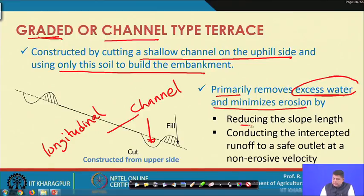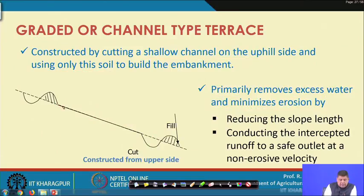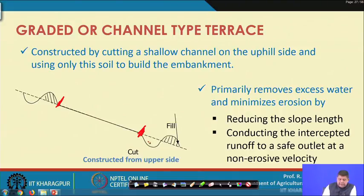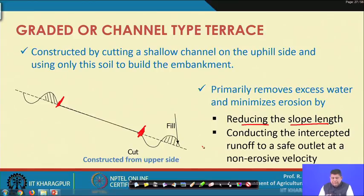Erosion is minimized by reducing slope lengths. A series of embankments creates catchment areas between any two bunds. Whatever rainfall occurs in that area is confined to it, and only that much flow must be carried away by the channel. We cut the total slope length into segments by constructing a series of graded or channel type terraces.